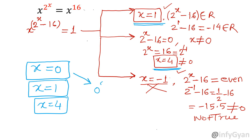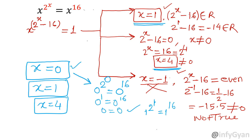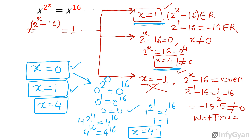Let's verify all three values. For x equals 0: 0 raised to the power 2 raised to the power 0 — 2 raised to the power 0 is 1, so 0 power 1 equals 0, and 0 raised to the power 16 is 0. So x equals 0 is a correct solution. For x equals 1: 1 raised to the power 2 raised to the power 1 equals 1 raised to the power 16 — 1 raised to the power any real number is 1, so that is also a correct solution. For x equals 4: 4 raised to the power 2 raised to the power 4 should equal 4 raised to the power 16. Since 2 raised to the power 4 is 16, that gives 4 raised to the power 16 equals 4 raised to the power 16. So x equals 4 is confirmed. There are 3 values: x = 0, x = 1, and x = 4.